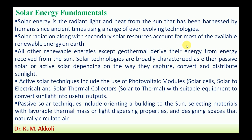Solar radiation, along with secondary solar resources, accounts for most of the available energy on Earth. Secondary solar resources are the indirect forms of solar energy — these include wind, biomass, tides, and water resources. Most renewable energies, except geothermal energy, are indirect forms of solar energy. All other renewables except geothermal derive their energy from energy received from the Sun.